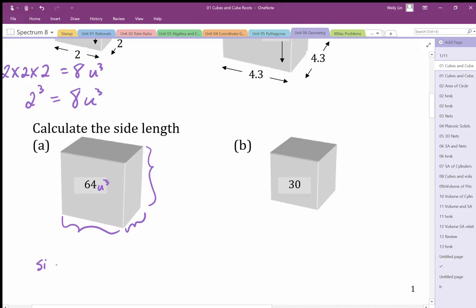so the side length is equal to the cube root of 64. And some of us know how to do this in our heads. The answer is going to be 4, 4 units of length.